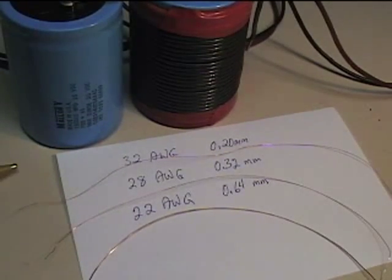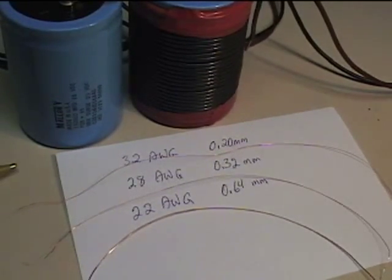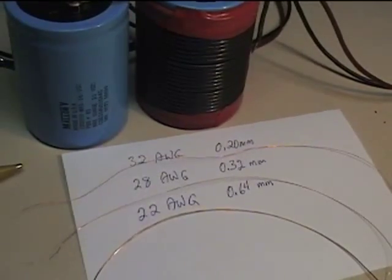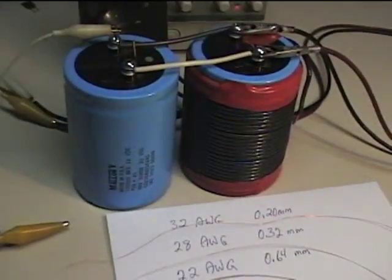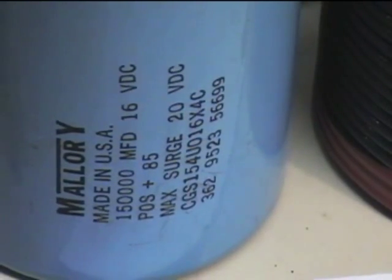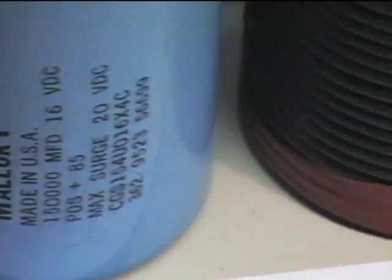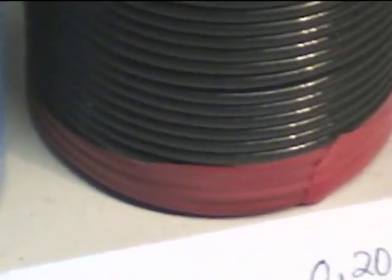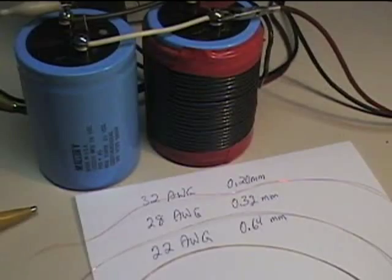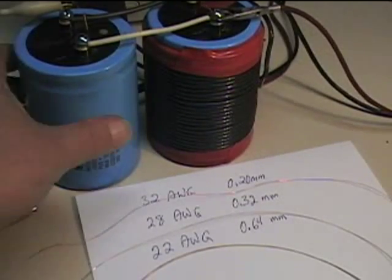These are going to be shorted on a capacitor, or a set of capacitors. What we have here are two capacitors, identical. They are 150,000 microfarad each, rated at 16 volts DC with a maximum surge of 20 volts DC. The one on the right, I put a little coil around it because I'm doing some other experiments.